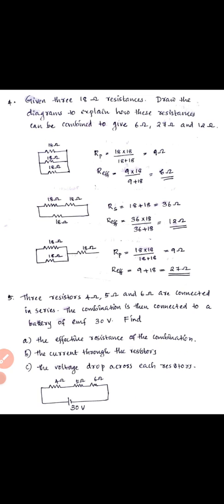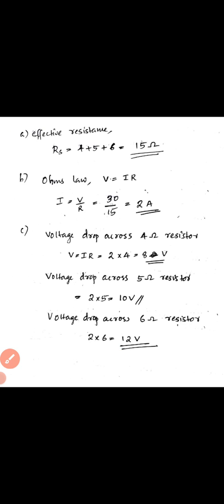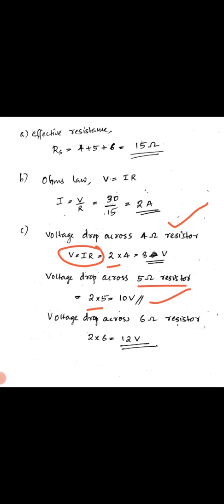For the voltage drop across each resistor, since the three resistors are in series, the same current of 2A flows through all. Voltage drop = current into resistance. Across 4 ohm: 2 into 4 = 8 volts. Across 5 ohm: 2 into 5 = 10 volts. Across 6 ohm: 2 into 6 = 12 volts.